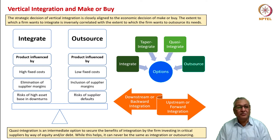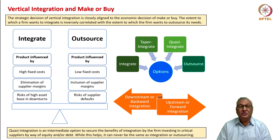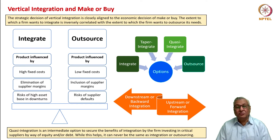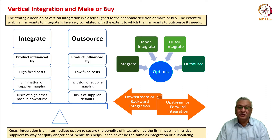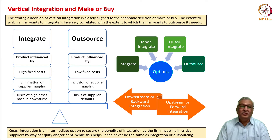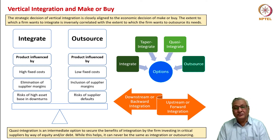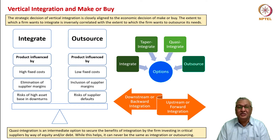On the positive side, integration eliminates supplier margins, which typically range between 10 to 20 percent depending on the type of competence — a sizable saving. However, if the capital cost of setting up integration facilities exceeds that saving, it becomes an offsetting factor. With outsourcing, the product benefits from low fixed costs and an asset-light model, but supplier margins of 10 to 20 percent are built into component pricing. There is also the risk of supplier defaults during economic downturns.